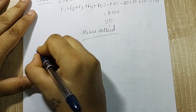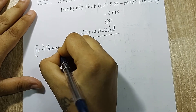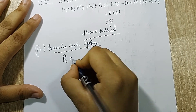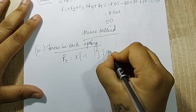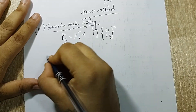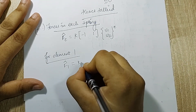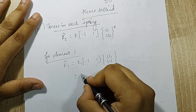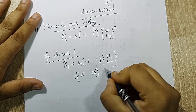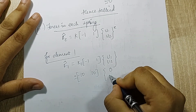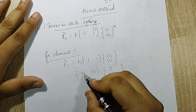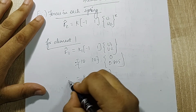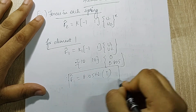The third quantity to calculate is the force in each spring. The formula is F_e_bar = K[-1, 1][U1, U2]^e. For element one: F1_bar = K1 * [-1, 1] * [U1, U2] = [-10, 10] * [0, 0.805] = 8.05 N. Since it is positive, the spring is in tension.